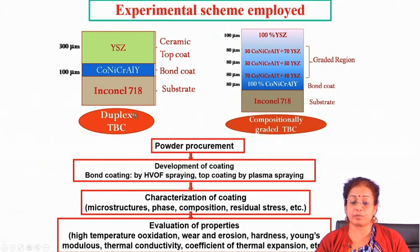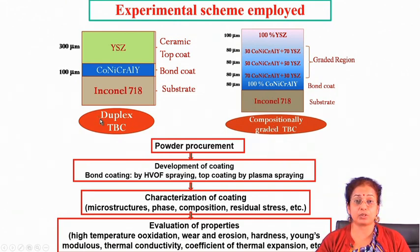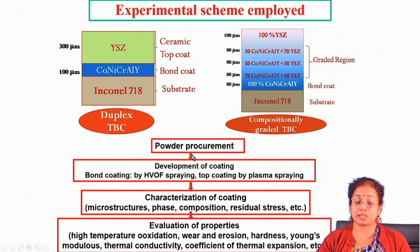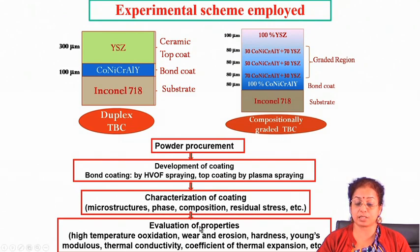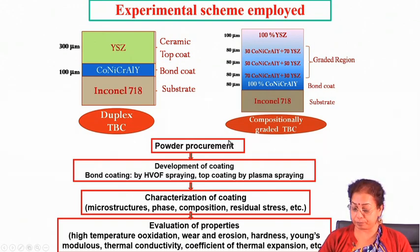We developed both kinds of coatings to show the effect of composition and gradation on microstructure and properties. The steps followed were: cook your powder, develop the coating, characterize the coating, then evaluate properties in terms of high temperature oxidation, wear, erosion, hardness, Young's modulus, thermal conductivity, and coefficient of thermal expansion. Finally, properties of both coatings were compared.